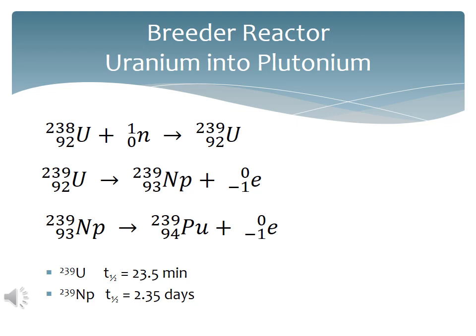Plutonium is a synthetic element made by taking uranium-238, hitting it with a neutron, converting it to uranium-239. Uranium-239 then undergoes beta decay to form neptunium-239, which undergoes another beta decay to form plutonium-239. All uranium-powered nuclear reactors produce plutonium-239 as a byproduct. A breeder reactor is simply a reactor designed for the sole purpose of producing plutonium.